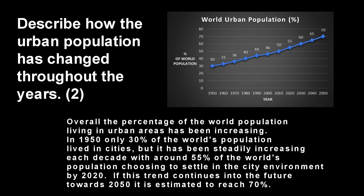Here's my model answer for that question. It's a two-mark question, so generally you're going to get one mark for referencing the pattern or trend of the data, and a second mark for referencing the actual data — the years and the percentages. Overall, the percentage of the world population living in urban areas has been increasing. In 1950, only 30% of the world's population lived in cities, but it is steadily increasing each decade, with around 55% of the world's population choosing to settle in cities by 2020. If this trend continues towards 2050, it is estimated to reach 70%. That's a basic breakdown of how to answer a two-mark question describing a graph.